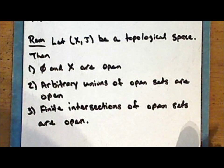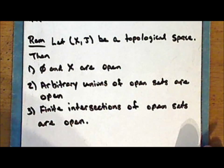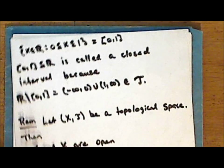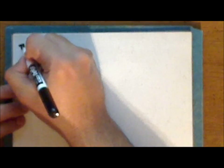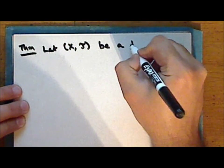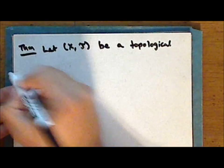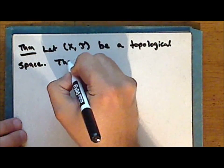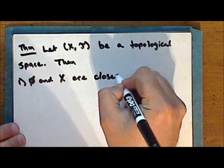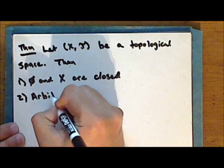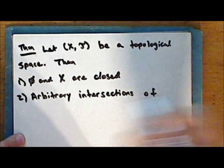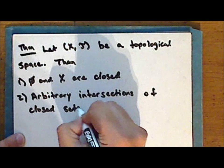Notice that this is simply a restatement of the definition in the language of open sets. Next, we will prove a theorem giving an equivalent characterization of a topological space in the language of closed sets. So once again, let the set X together with some topology be a topological space. Then the empty set and the entire set are closed, and arbitrary intersections of closed sets are closed.